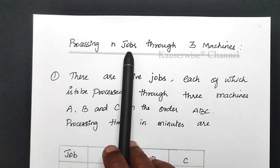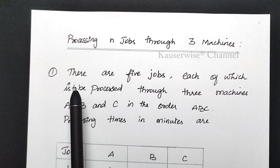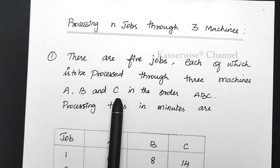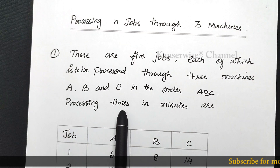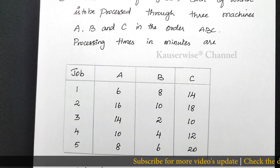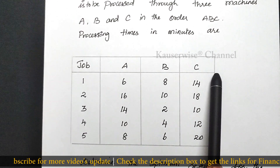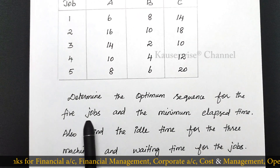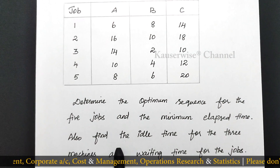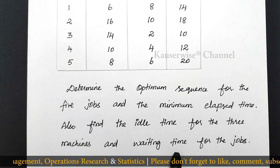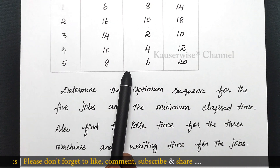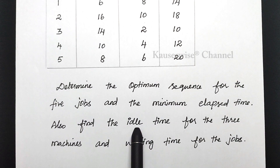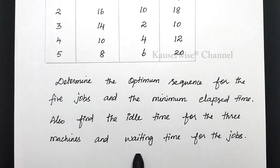See the problem: processing N jobs through 3 machines. There are 5 jobs, each of which is to be processed through 3 machines A, B, C in the order A, B, C. Processing times in minutes are given in the tabular column. With this, determine the optimum sequence for the 5 jobs and minimum elapsed time. Also find the idle time for 3 machines and waiting time for the 5 jobs.